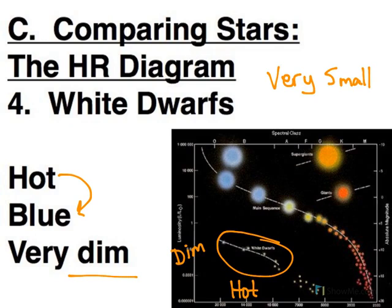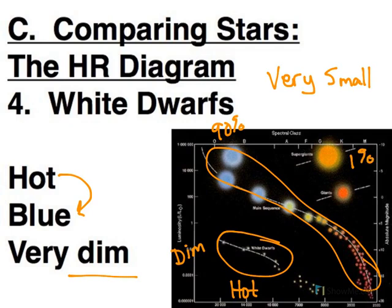So while most stars, 90% of the stars are on the main sequence, about 1% are giants, and about 9% are dwarfs. Turns out this is going to provide us information about how stars live and die. So you can learn quite a bit about stars just from this one graph called the HR diagram.